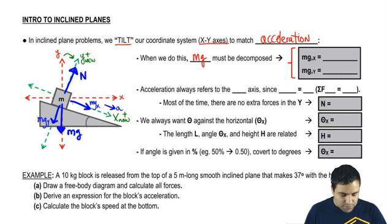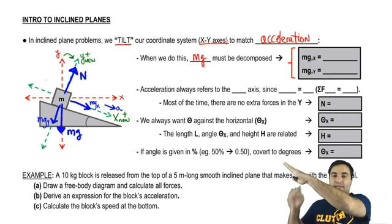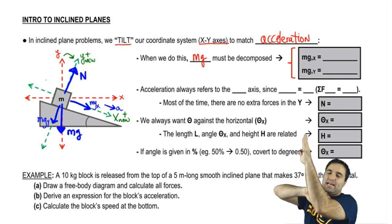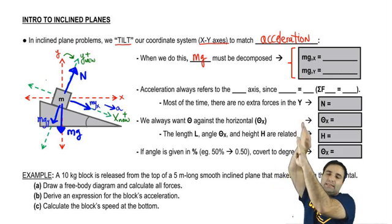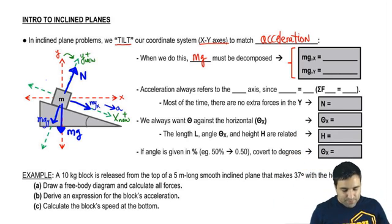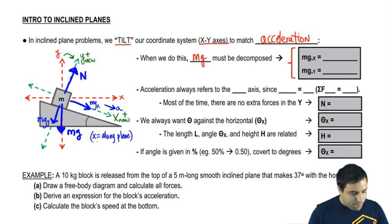So I want to also point out that the x axis is always going to be along the plane. So if this is your plane, this is your x axis. Even if you have a really steep plane, like let's say 89 degrees, it's almost vertical. This is still the x axis, even though it looks a lot more like the y axis. So x axis is always along the plane.